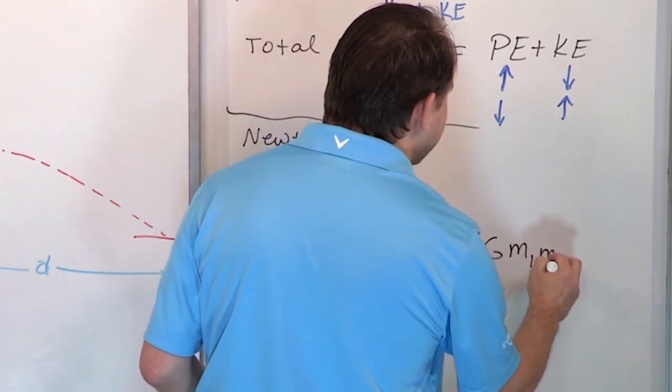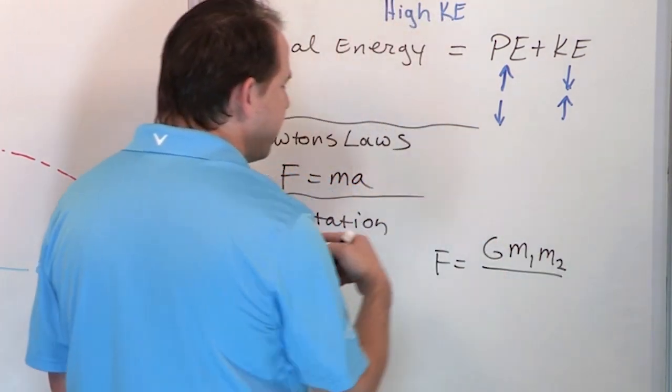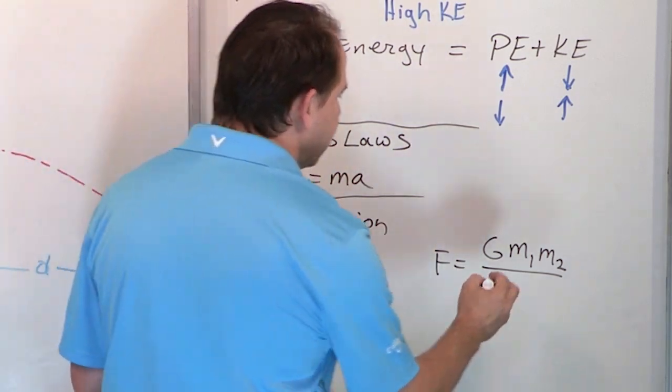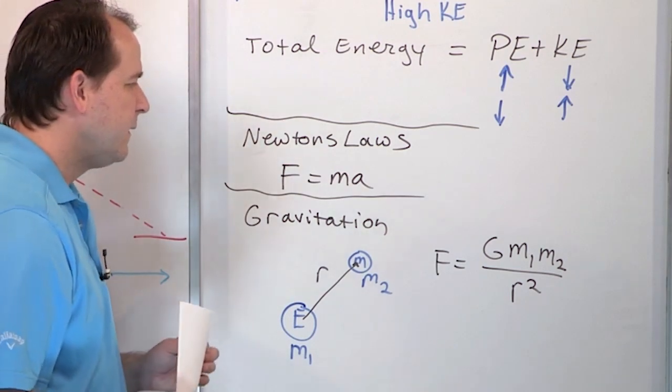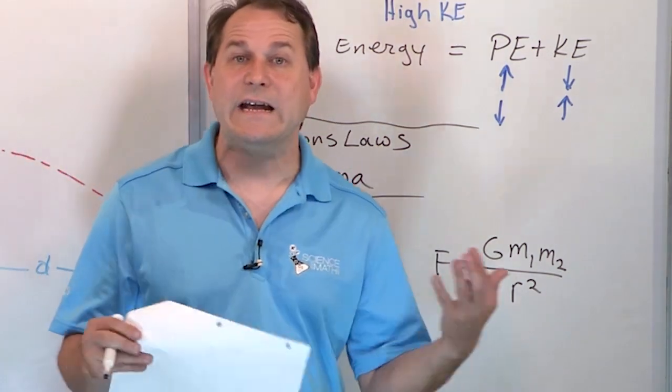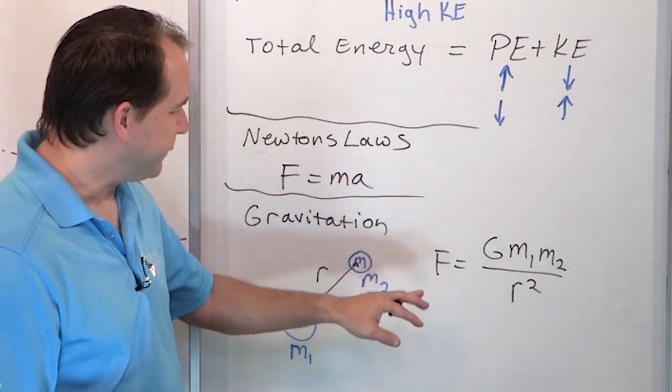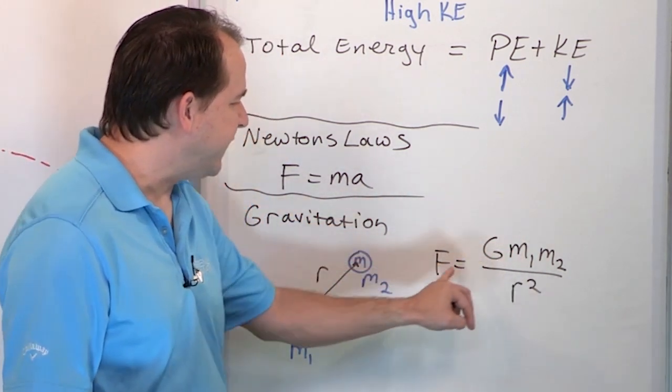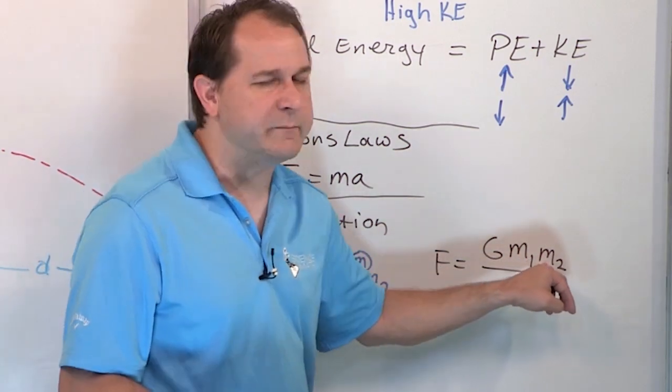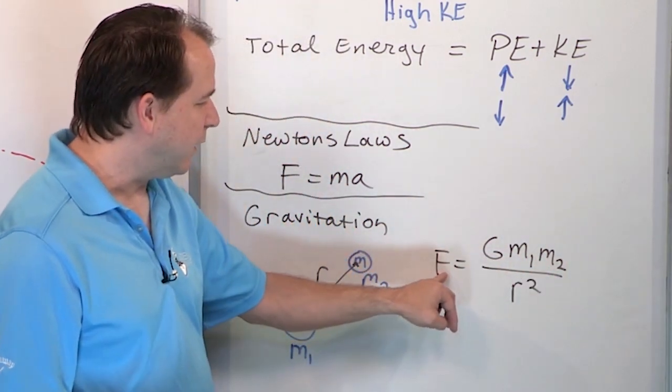Times mass one times mass two, so we're multiplying all the masses together, times G, this number, and on the bottom it's the distance between them but squared. So you might hear this called the inverse square law or something like this. So if the earth's mass gets bigger, M1, then the force is bigger. If the moon's mass gets bigger, the force is bigger.